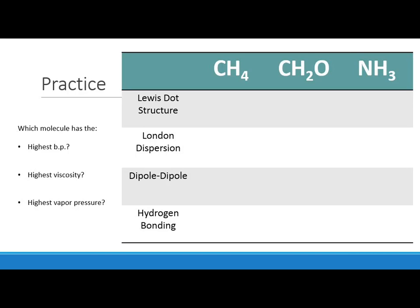Let's work through an example with CH₄, CH₂O, and NH₃. For any problem like this, the first thing to do is draw out the molecule using the Lewis dot structure, which tells us what kind of intermolecular forces are present. Which of these exhibit London dispersion forces? All of them — because all molecules exhibit dispersion forces.